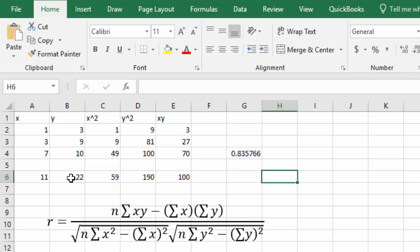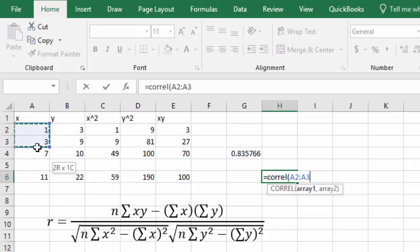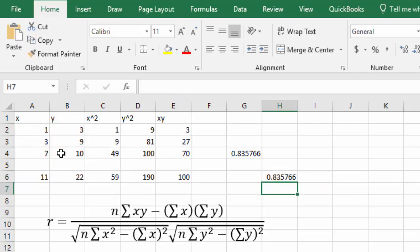But as I said, Excel actually makes this easier, I don't have to go through all these steps. I could have just typed, equals, CORREL, open a parenthesis, select the x's, comma, select the y's, and when I hit enter, Excel will do all of those calculations for me in one quick step, giving me the exact same value.